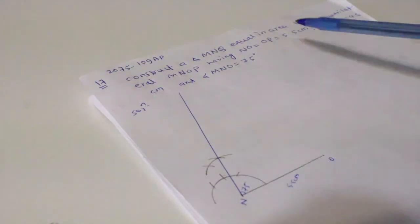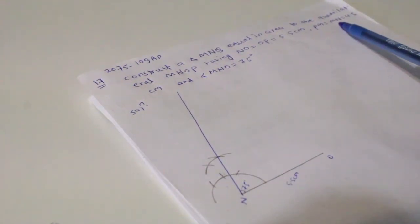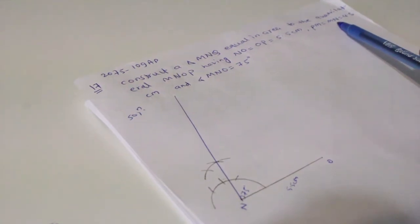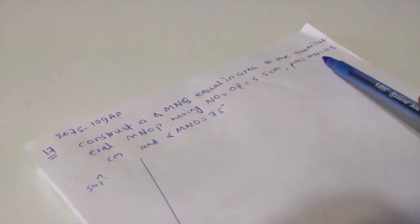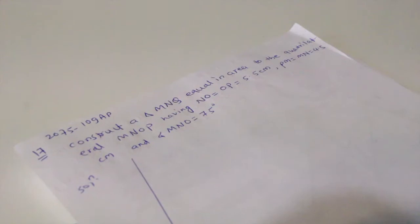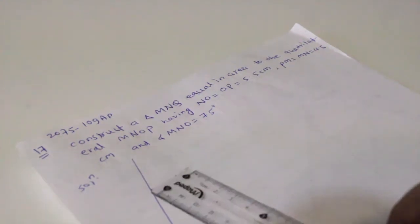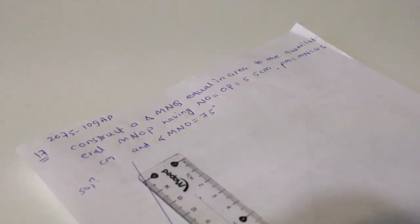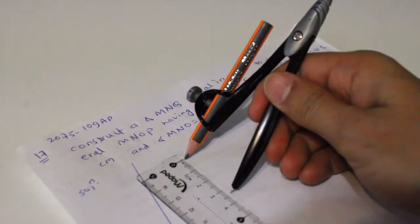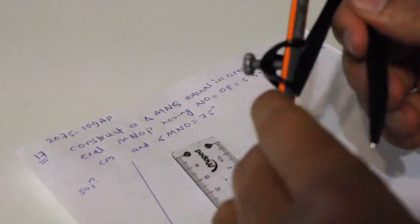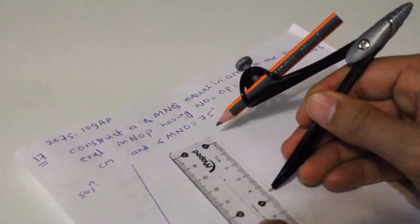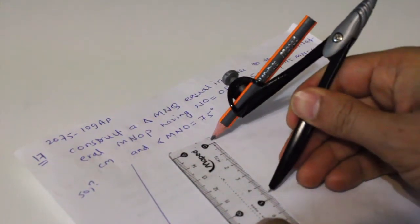Now from N there is another line. From N there is MN. MN is 4.5 cm. So what I would do, I would use a compass. Let's say this is a compass, a scale. From the scale, use this 4.5. This is 3.5, so what I'm gonna do, this is 4.5.